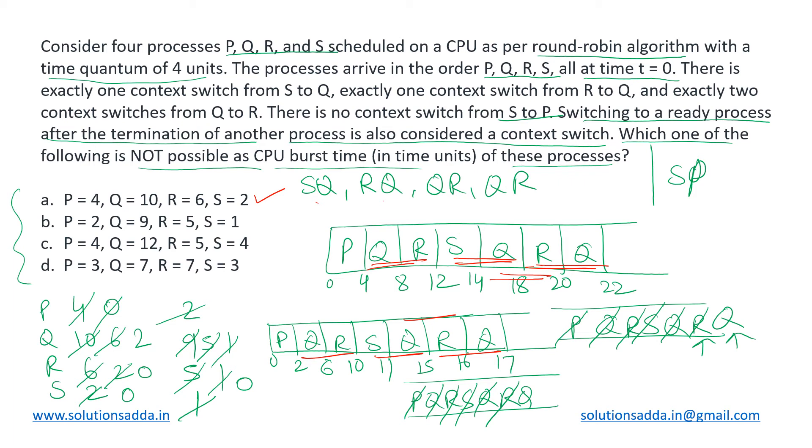Now let us have a look at the third option which is 4, 12, 5, and 4. We have the burst times of these processes as 4, 12, 5, and 4. And what were the context switches we were considering? SQ, RQ, QR and QR, and SP was not allowed. Let us check for this one using round-robin algorithm with TQ equal to 4.